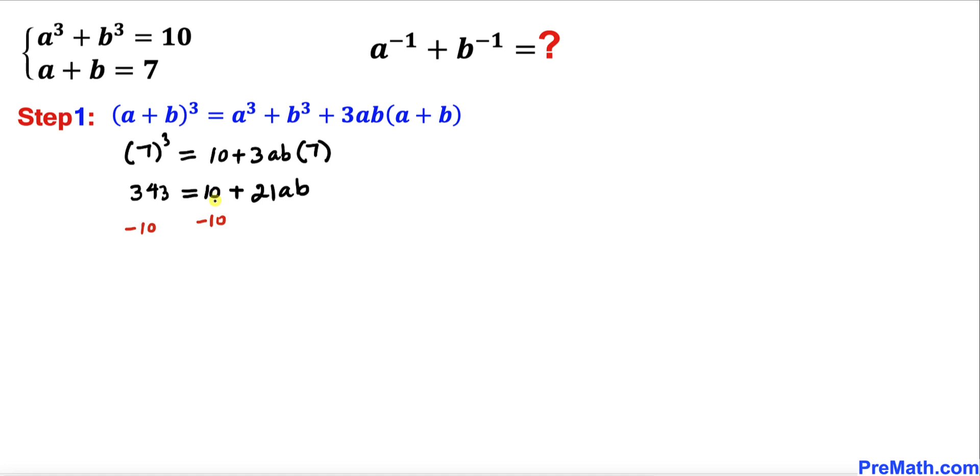Let's go ahead and subtract 10 from both sides. So on the left hand side we got 333 = 21ab. Now let's divide both sides by 21. Here 333 divided by 21 could be reduced to 111 divided by 7.